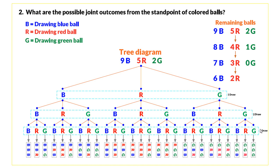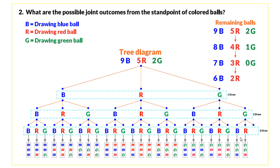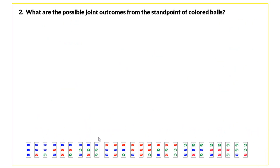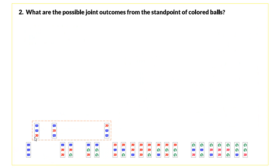We must remember that there are only two green balls total, so any branch requiring three green draws must be eliminated — those outcomes simply fade away. After eliminating impossible branches, these are all the possible joint outcomes. We now group them: two blue and one red in one subset, two blue and one green in another subset.